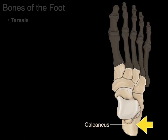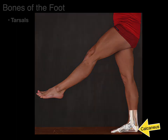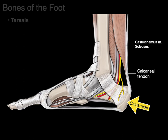Next we have the calcaneus. The calcaneus is Latin for heel bone, and in surface anatomy, there's the heel bone or the calcaneus. Taking this medial view of the foot and zooming in, there's the calcaneus. The calcaneus has a number of tendons that attach to it, one of which is the calcaneal tendon — also known as the Achilles tendon or tendocalcaneus — where the gastrocnemius and soleus muscles anchor to the calcaneus.